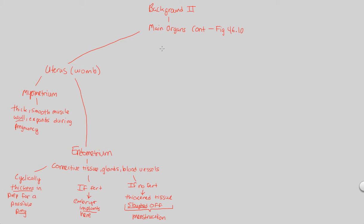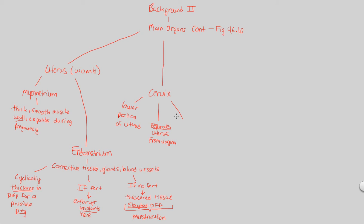The next structure to cover is the cervix. Anatomically speaking, the cervix is simply the lower portion of the uterus. It's a structure that serves as a separation — it specifically separates the uterus from the vagina. That is its overall goal: to provide this separation.